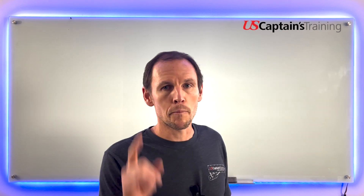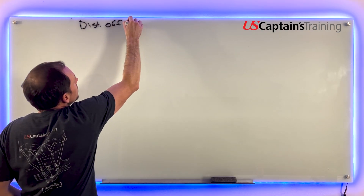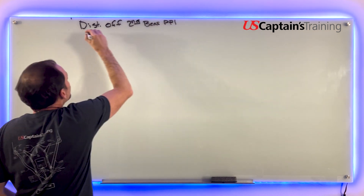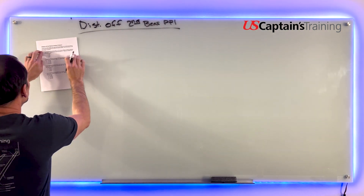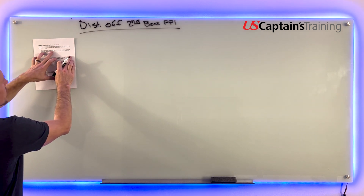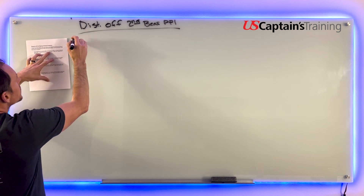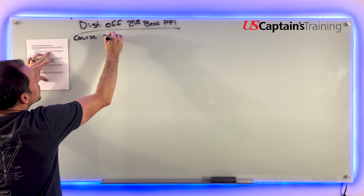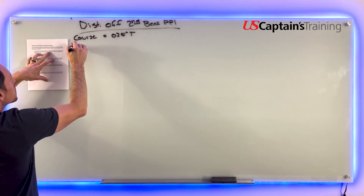Distance off second bearing practice problem one. Let's get right into it. First thing we do is record the information. You are steaming on a course of 25 degrees true at 15.5 knots. Our course is equal to 025 degrees true.